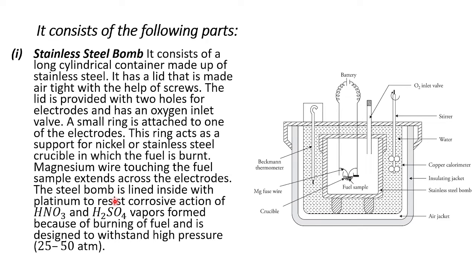The steel bomb is lined inside with platinum to resist the corrosive action of vapors like HNO3 and H2SO4 formed because of the burning of fuel. It is also designed to withstand high pressure of 20 to 50 atmospheres.